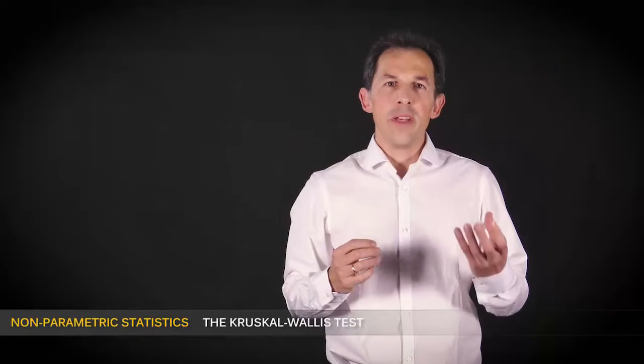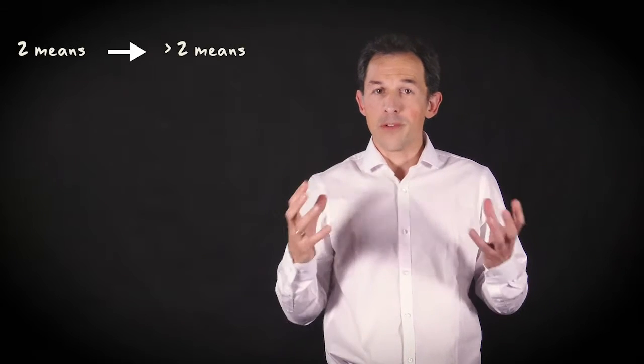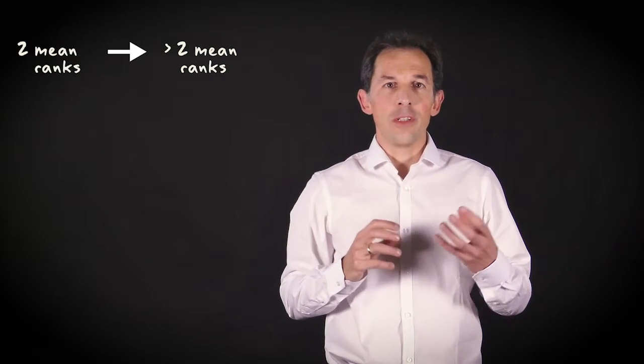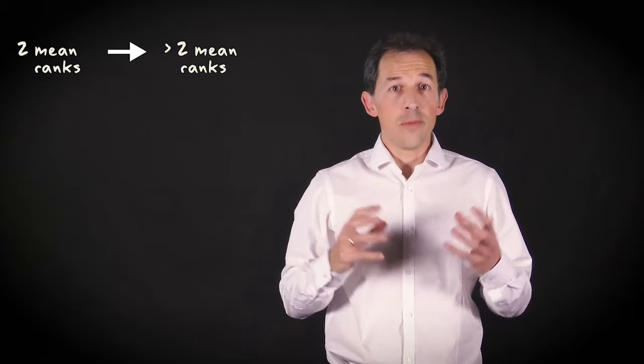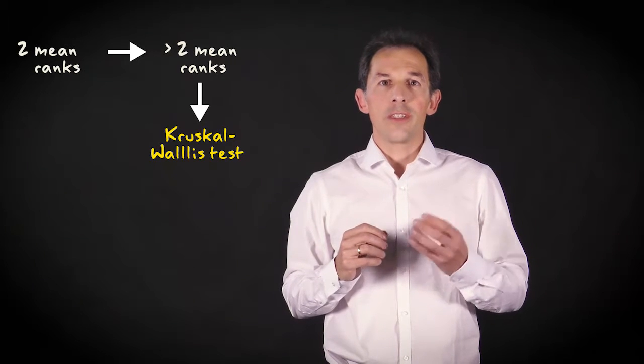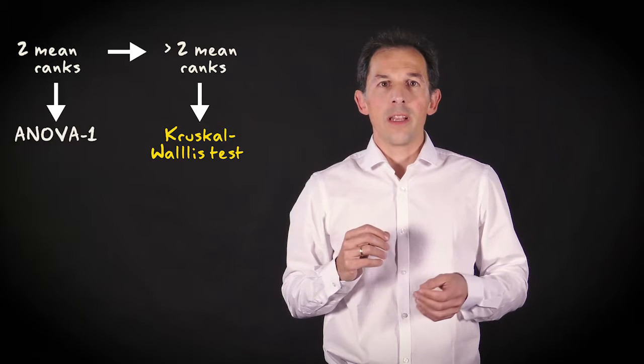Just as the comparison of means among two groups can be extended to a comparison of means across many groups, the non-parametric approach to compare mean ranks between two groups can also be extended to multiple groups. And the test that does this is called the Kruskal-Wallis test. It's a non-parametric counterpart to the one-way analysis of variance.